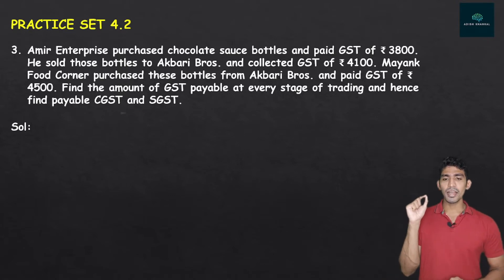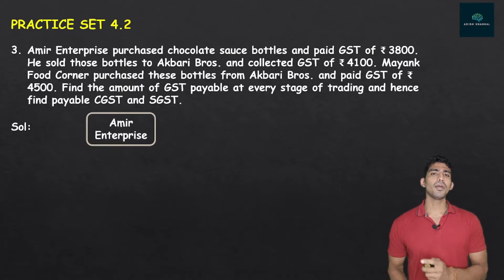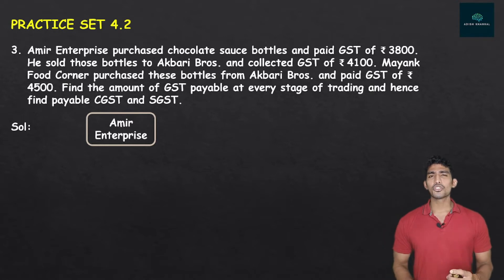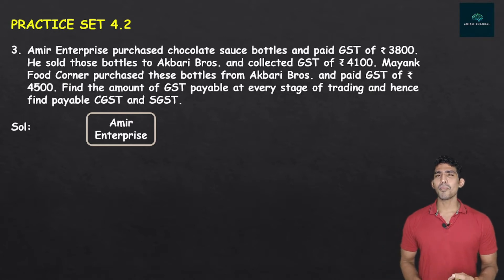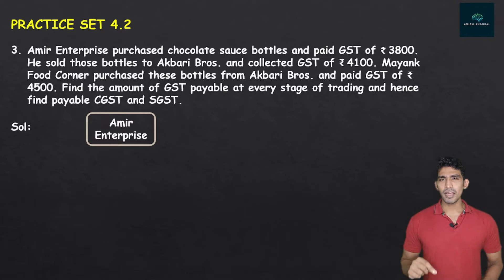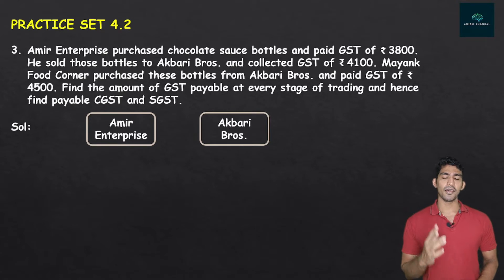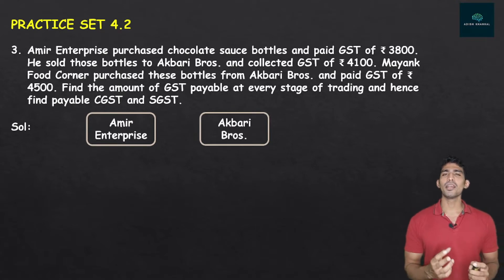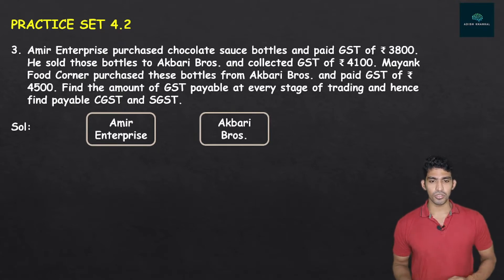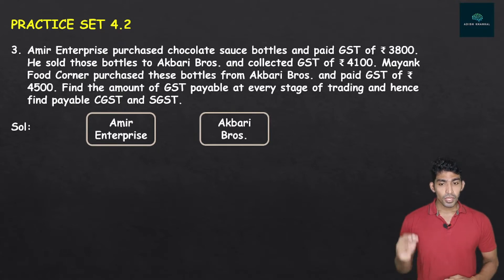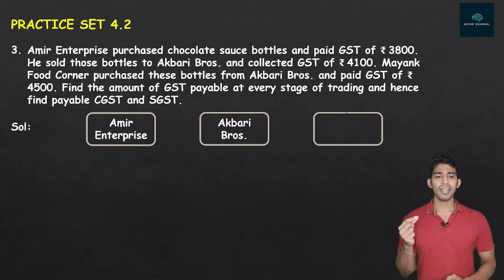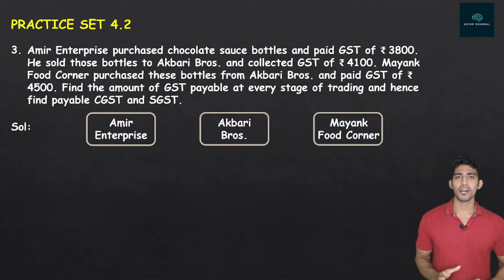Here, Amir Enterprise is being discussed, so I have made a box for Amir Enterprise. To help you understand this question, I have made a flow chart. So Amir Enterprise comes first, then the second entity is Akbari Brothers, and then there is one more entity — Mayank Food Corner.